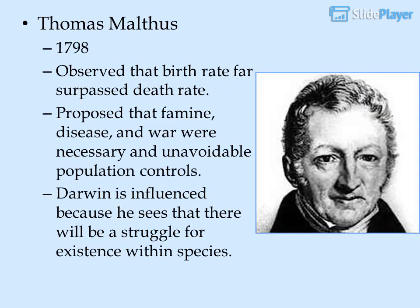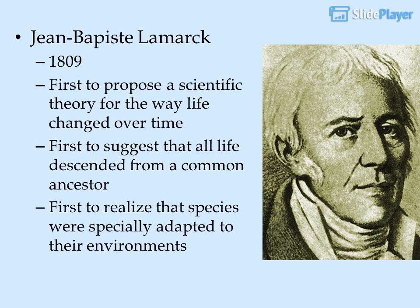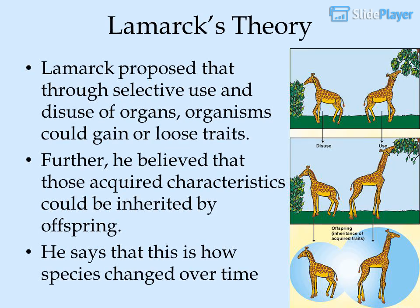Thomas Malthus in 1798 observed that birth rate far surpassed death rate, and proposed that famine, disease, and war were necessary and unavoidable population controls. Darwin was influenced because he saw there would be a struggle for existence within species. Jean-Baptiste Lamarck in 1809 was first to propose a scientific theory for the way life changed over time, first to suggest that all life descended from a common ancestor, and first to realize that species were specially adapted to their environments. Lamarck proposed that through selective use and disuse of organs, organisms could gain or lose traits, and that those acquired characteristics could be inherited by offspring.